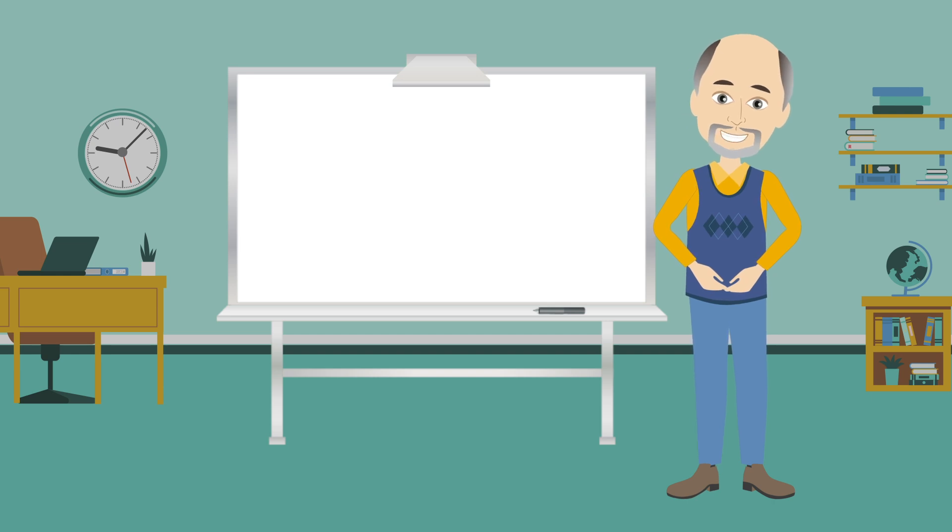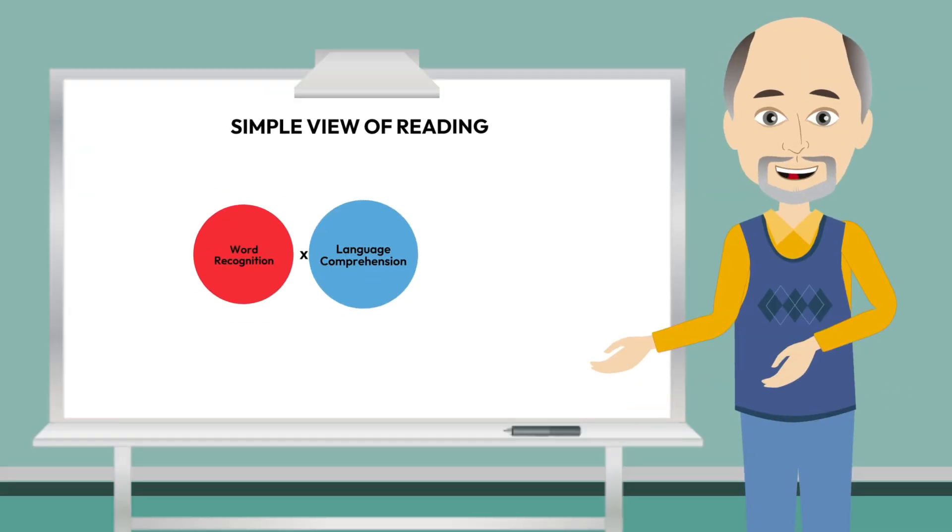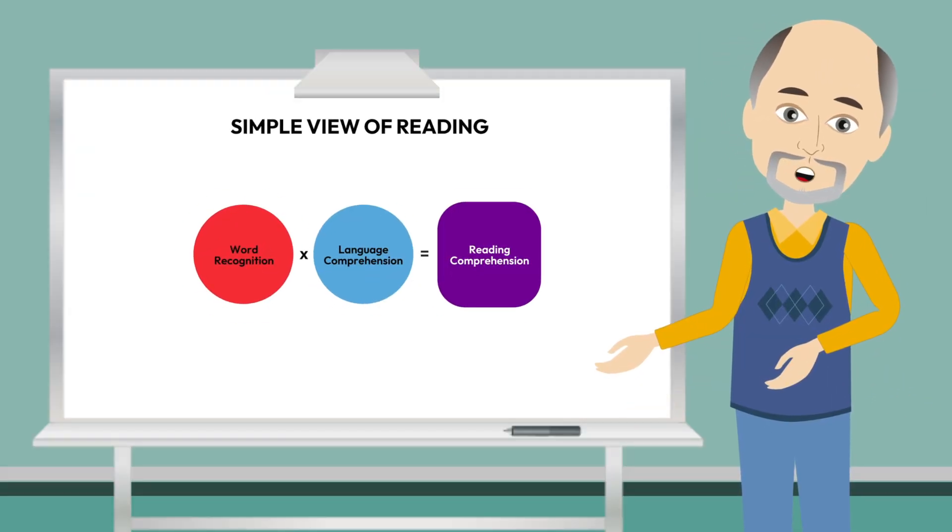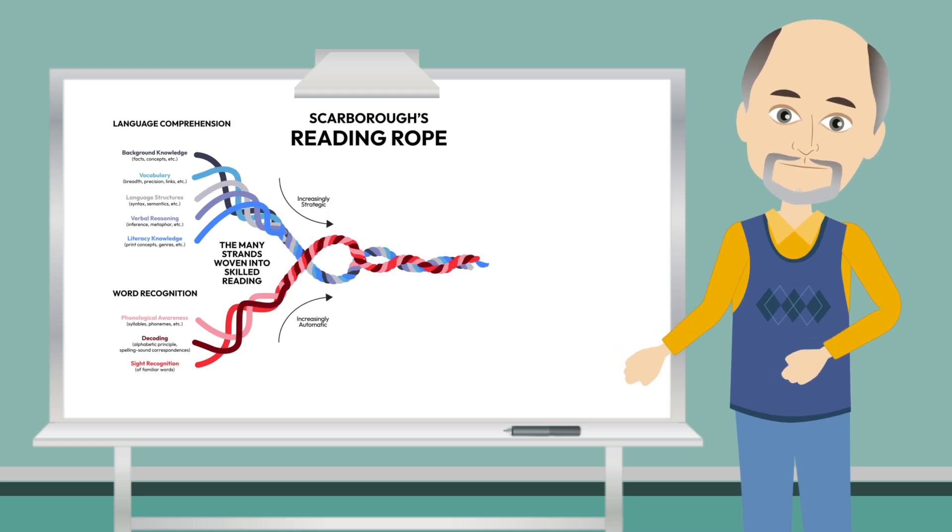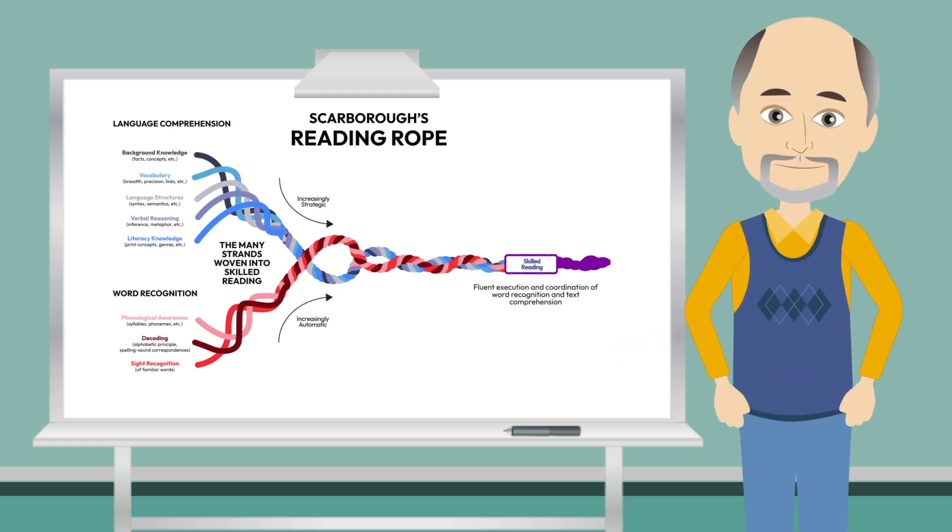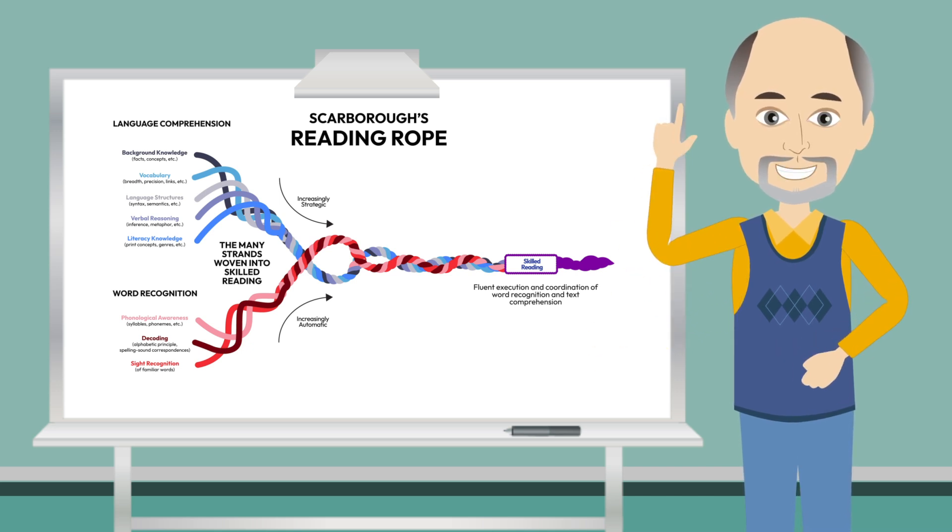The last big concept I hope you walk away with relates to how all of this connects to the science of reading research we are learning about, specifically for reading models. The simple view of reading and Scarborough's reading rope both emphasize two critical domains of reading comprehension: word recognition and language comprehension.